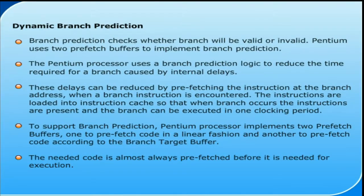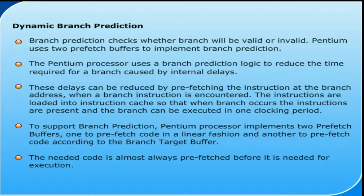Dynamic branch prediction checks whether a branch will be valid or invalid. The Pentium uses two prefetch buffers to implement branch prediction. The branch prediction logic reduces the time required for a branch caused by internal delays. These delays can be reduced by prefetching the instruction at the branch address. When a branch instruction is encountered, the instructions are loaded into the instruction cache so that when the branch occurs, the instructions are present.